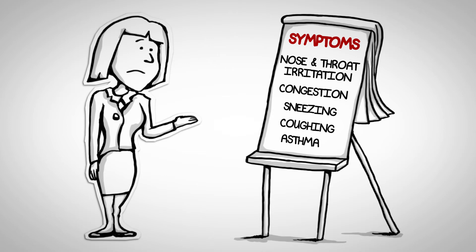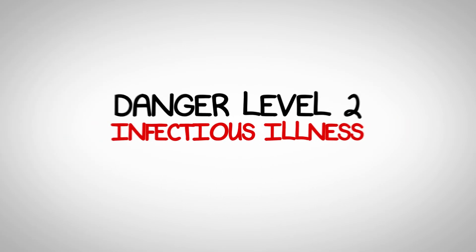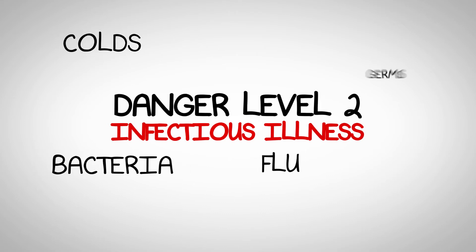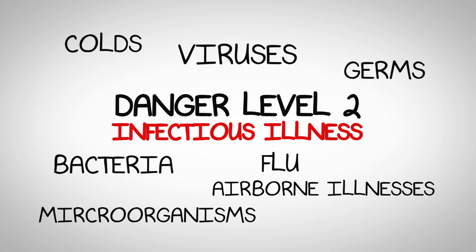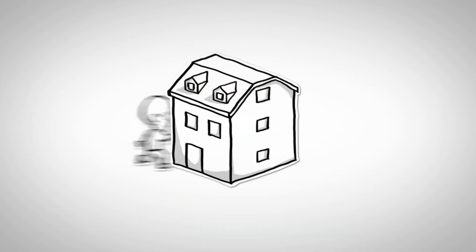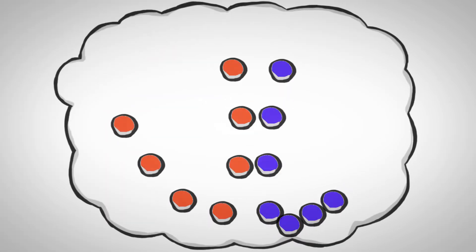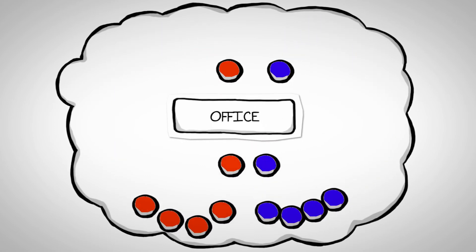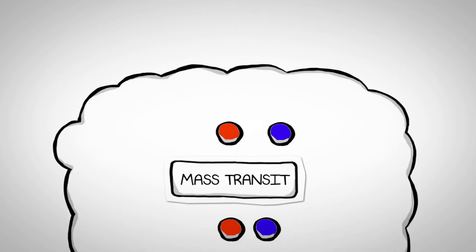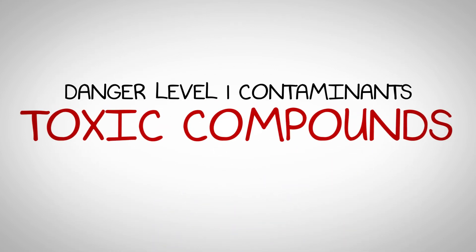Have you ever said, 'I'm going outside for a breath of fresh air'? Danger level two contaminants are infectious illness in the form of colds, flu, bacteria, germs, and viruses — they are airborne illnesses or microorganisms. These germs, viruses, and bacteria are naturally carried in by animals and family members from the outside. Once in the house, they go airborne and get sucked into the air distribution system and circulated around the home. You can relate to the transferring of illness by sick people present in the same home, office, school, or mass transit vehicle.